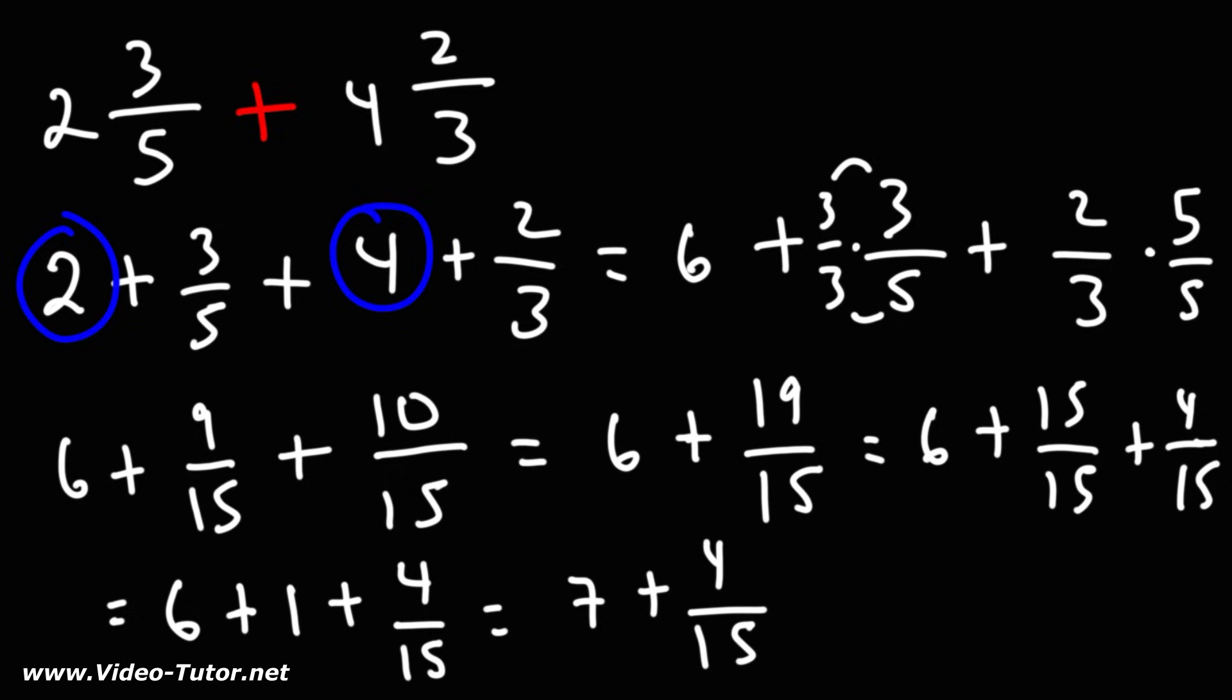When you have a whole number plus a fraction you can write that as a mixed number. So the answer is 7 and 4 over 15. So that's how you can add two mixed numbers.